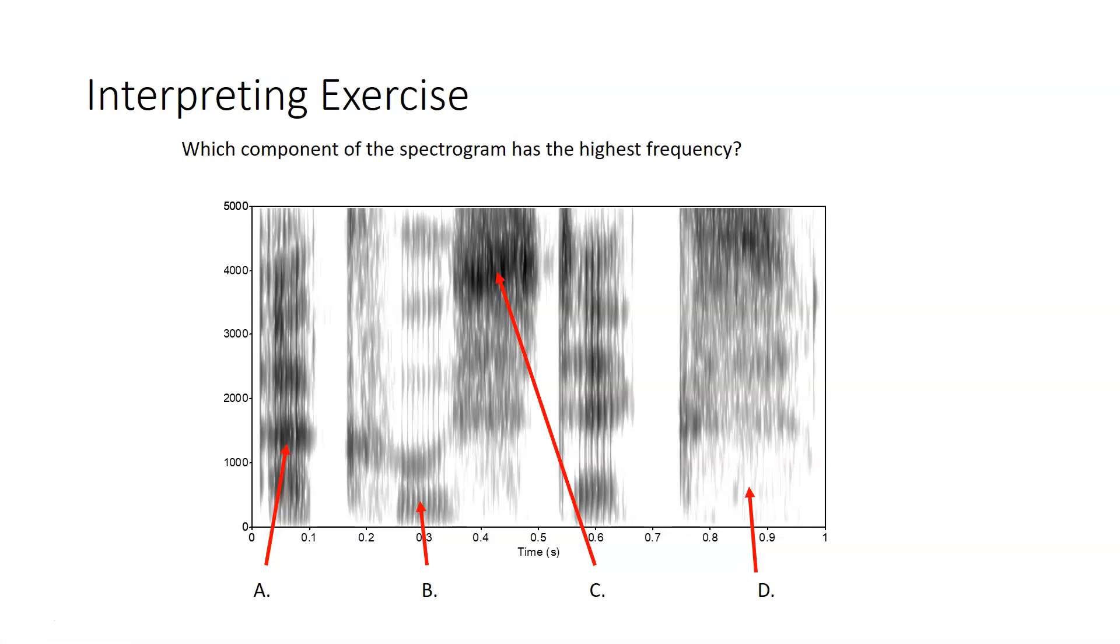If we switch to a different dimension and ask which has the highest frequency, frequency is represented on the y-axis, the vertical axis up the side. So, among those three arrows, the one that points to the highest location, which is, again, C, is the location with the highest frequency.